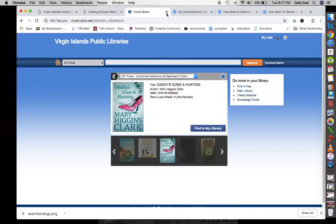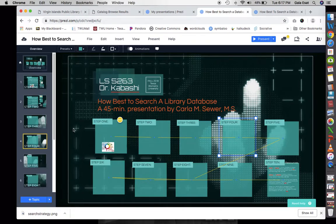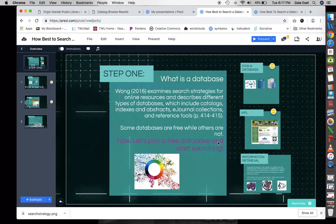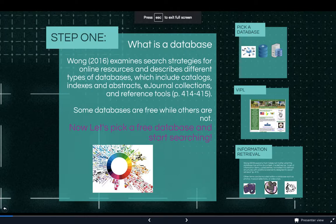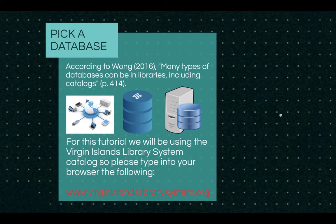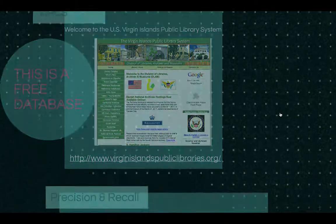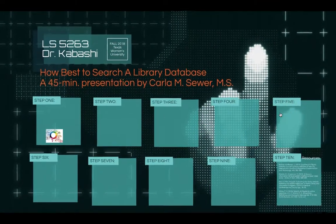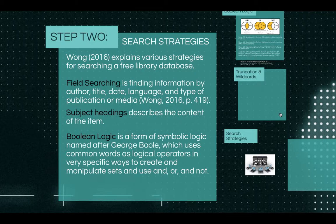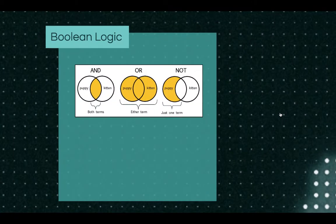When we look at the best way to search a database, there are strategies that are important in searching. Let's review: a database is a collection of information. We picked our database — the Virgin Islands public library system, which is a free database. Precision and recall — getting all the relevant material — is what we looked at. The strategies we used were: field searching, subject headings, Boolean logic, truncation, and wildcard.